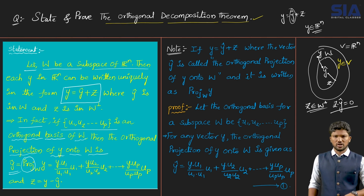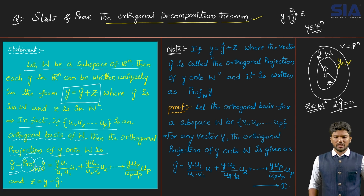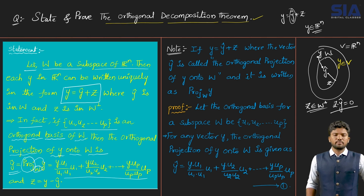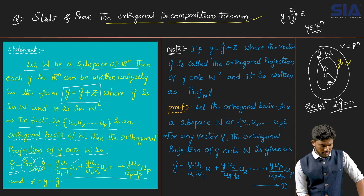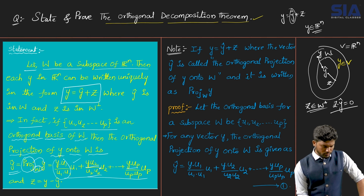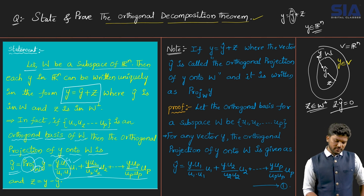In shortcut form, we write the projection of y with respect to W. The projection of y on the subspace W is given by the equation: y-hat equals (y·u1)/(u1·u1) times u1 plus (y·u2)/(u2·u2) times u2, plus up to (y·u_p)/(u_p·u_p) times u_p. Here (y·u1)/(u1·u1) is the formula for the weight c1, as discussed in the previous lecture.